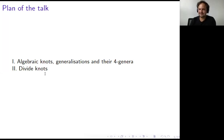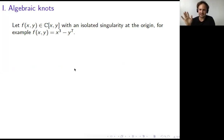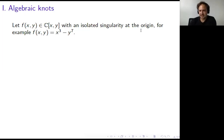Let's start with algebraic knots. Everything I'm going to say on the next couple of slides is classic from singularity theory, found for example in Milnor's 1968 notes, 'Singular Points of Complex Hypersurfaces.' Take any complex polynomial in two variables with an isolated singularity at the origin — you may really just take the polynomial f(x, y) = x³ − y⁷.